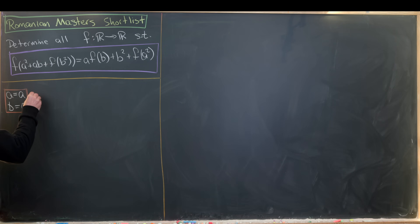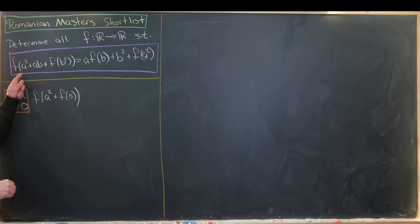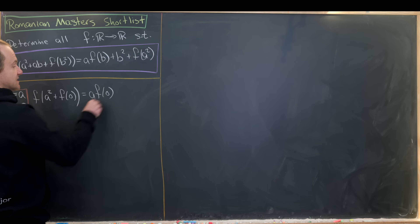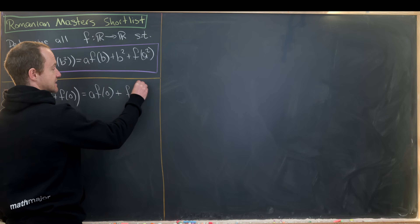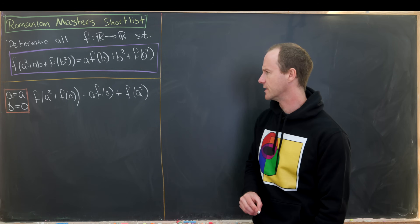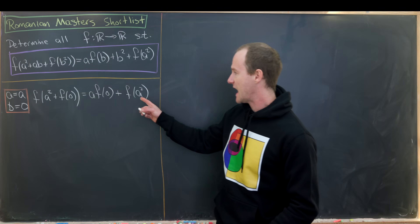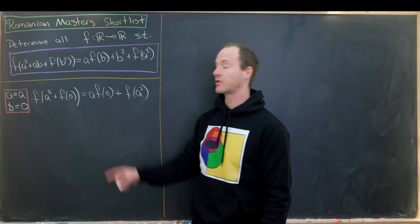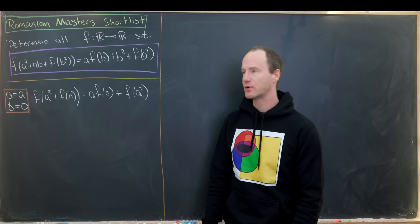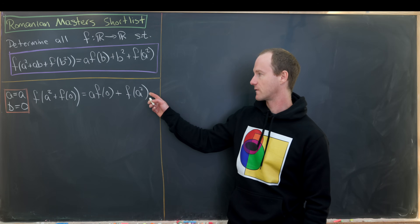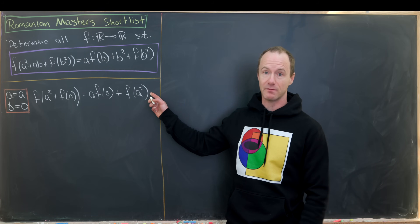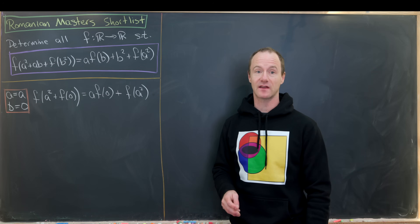Setting b = 0 gives us f(a²) + f(0) on the left-hand side, and a·f(0) + f(a²) on the right-hand side. Now, a is squared in two out of three appearances here, which is helpful because a and -a both square to a².